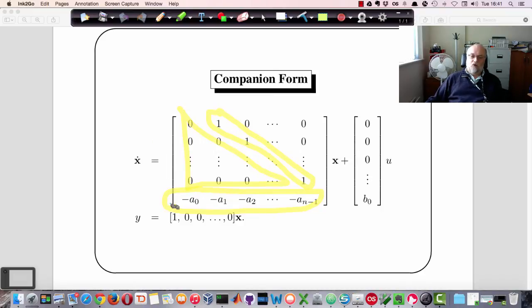In ascending order of the subscript. So we've changed the direction. It goes from minus a_0, which corresponds to x_1, all the way through to minus a_n-1, which corresponds to x_n.